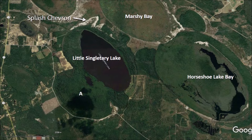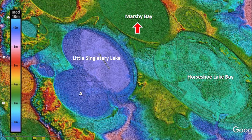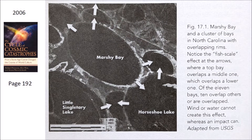Notice that there are actually two splash chevrons by Little Singletary Lake. Marshy Bay, to the northeast, has attracted attention because it overlays several Carolina Bays around it. In 2006, the book by Richard Firestone, Allen West, and Simon Warwick-Smith introduced the Younger Dryas impact hypothesis and brought attention to Marshy Bay and a cluster of bays in North Carolina with overlapping rims. The book says: 'Notice the fish scale effect at the arrows, where a top bay overlaps a middle one which overlaps a lower one. Of the eleven bays, ten overlap others or are overlapped. Wind or water cannot create this effect, whereas an impact can.'